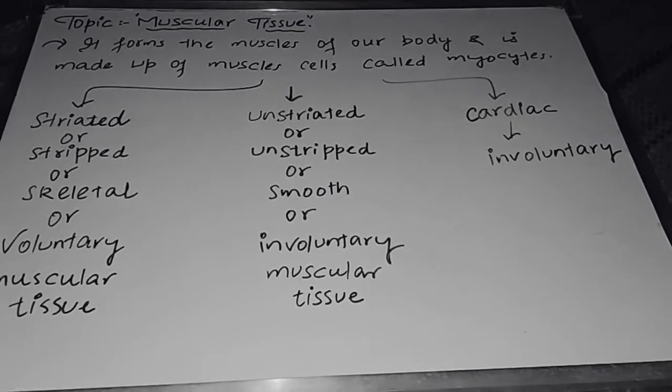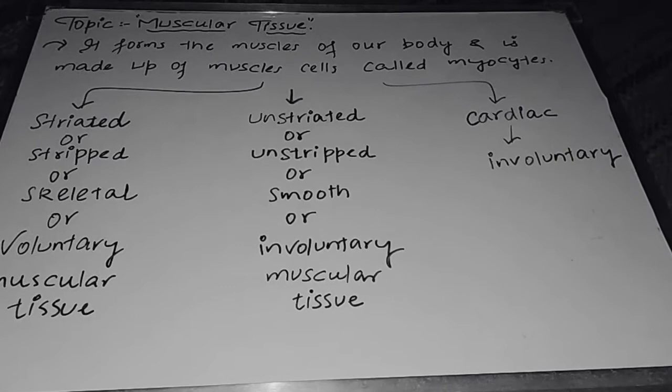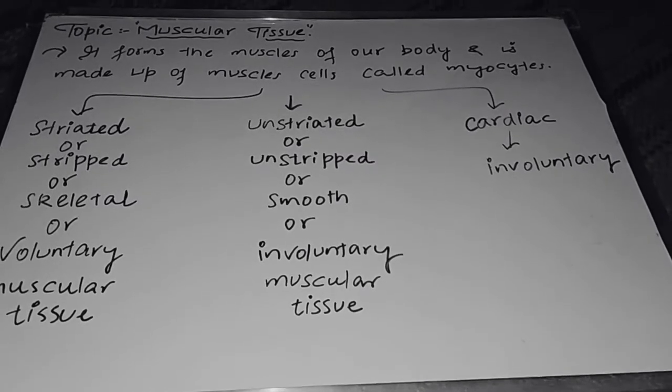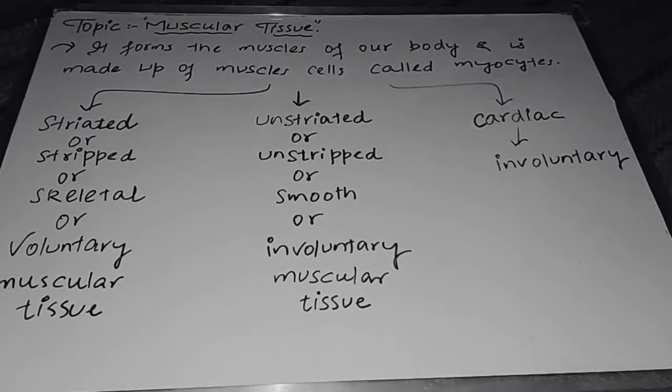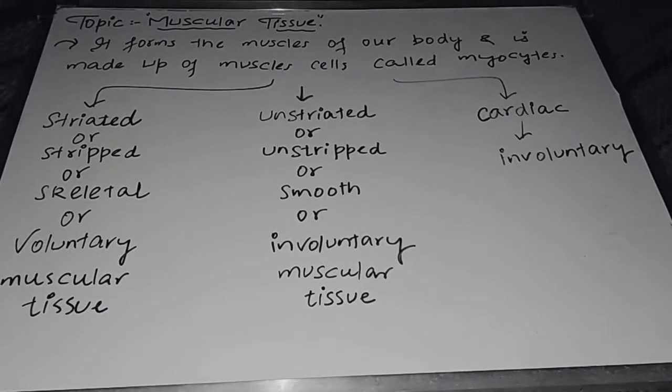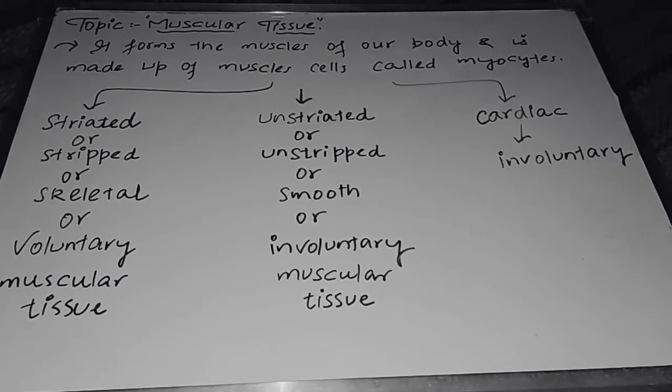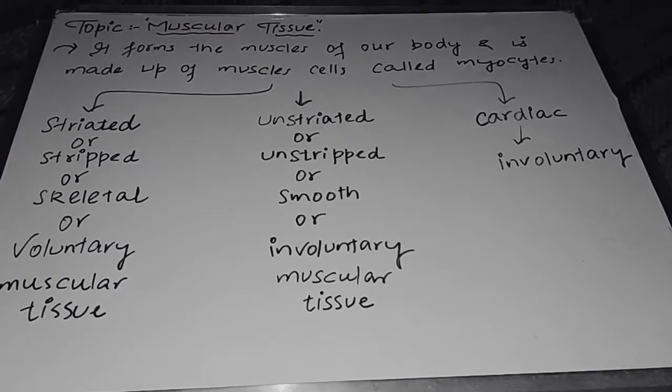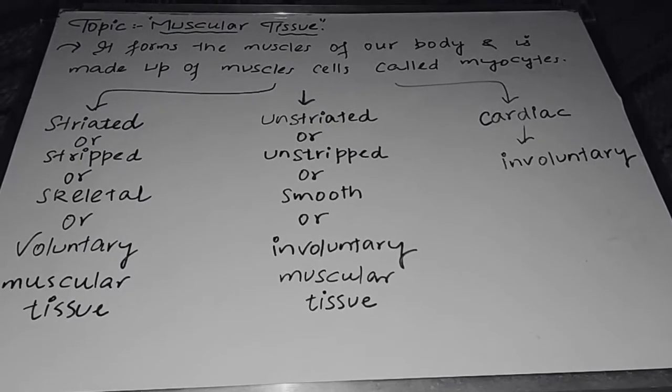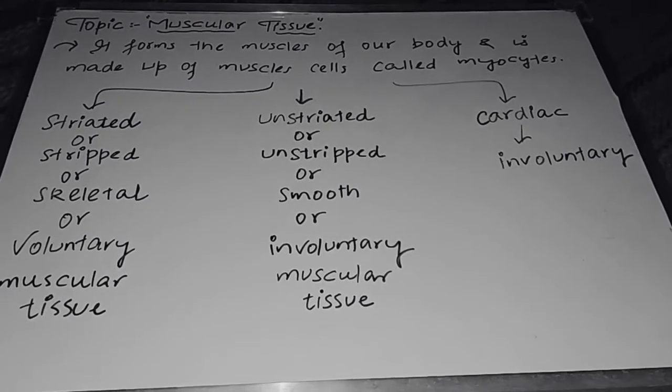Assalamu alaikum, dear students of Class 7th. Hope you're studying properly and enjoying your biological studies. This time I will take up one more animal tissue, that's muscular tissue. So far we discussed two of the important animal tissues, those were epithelial tissue and connective tissue.